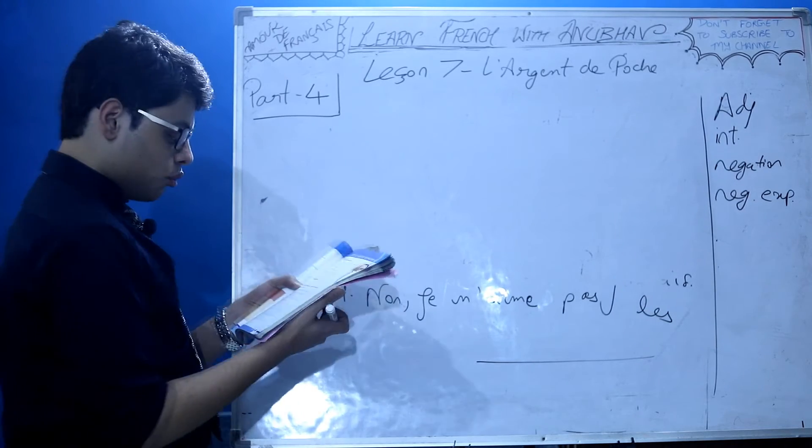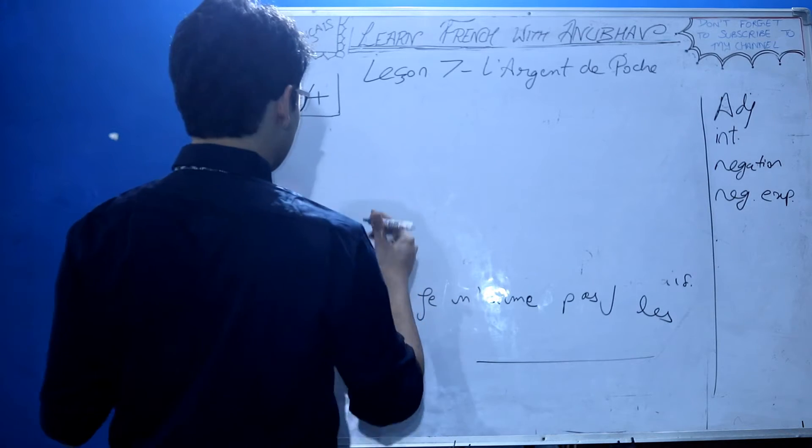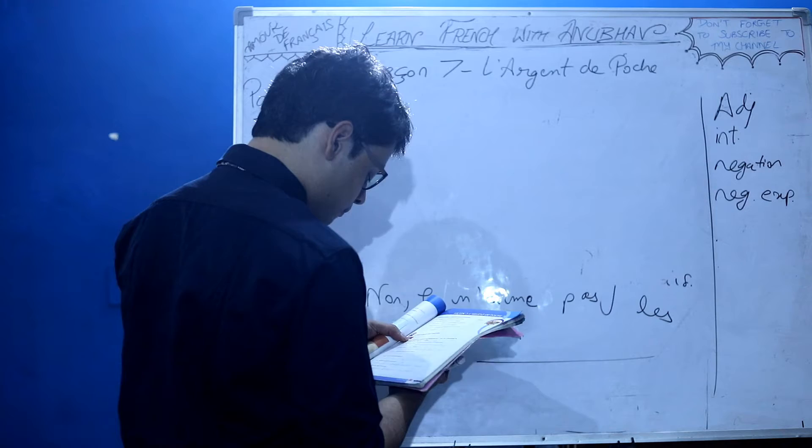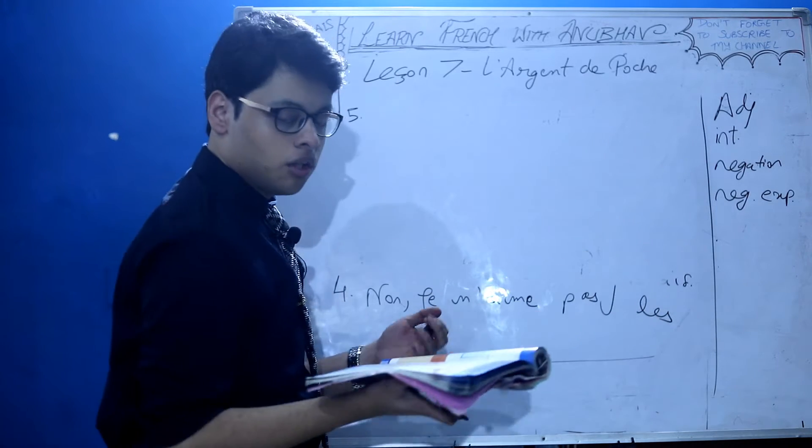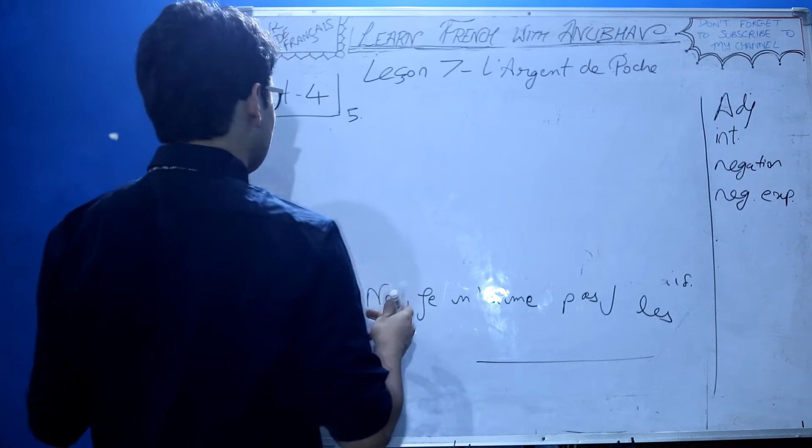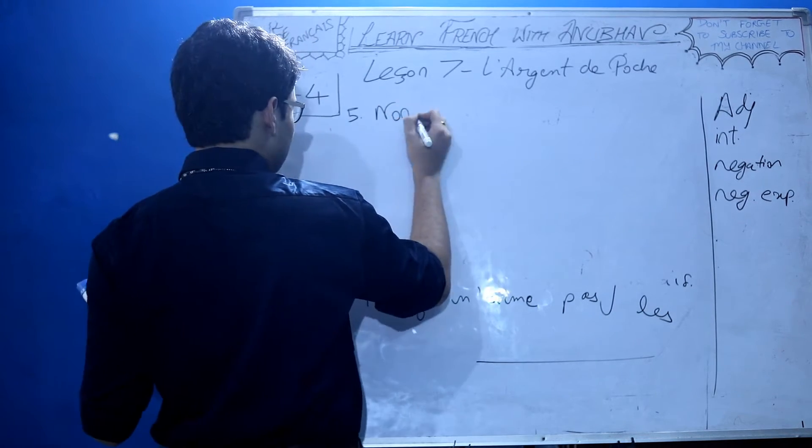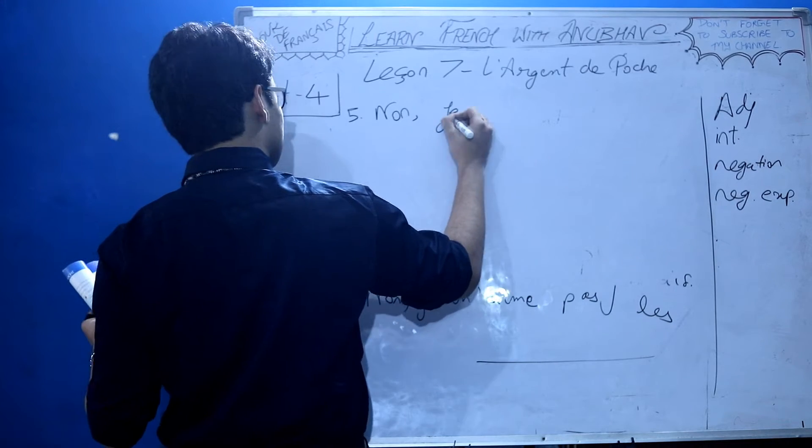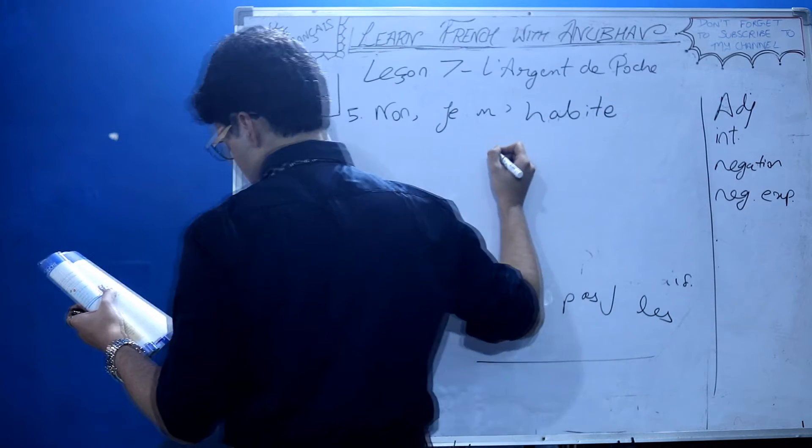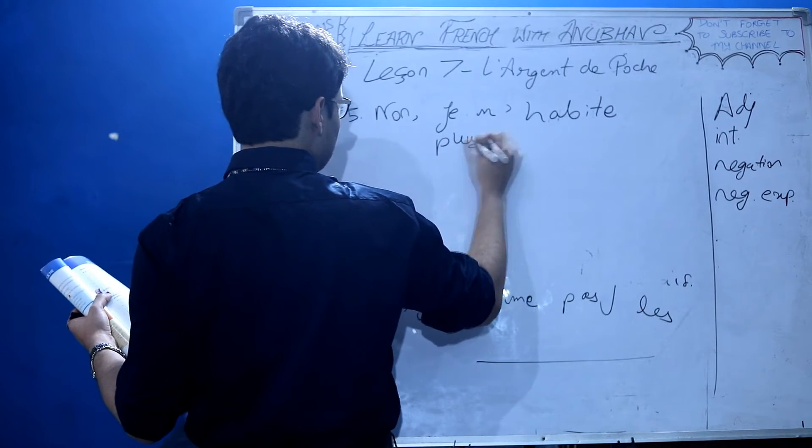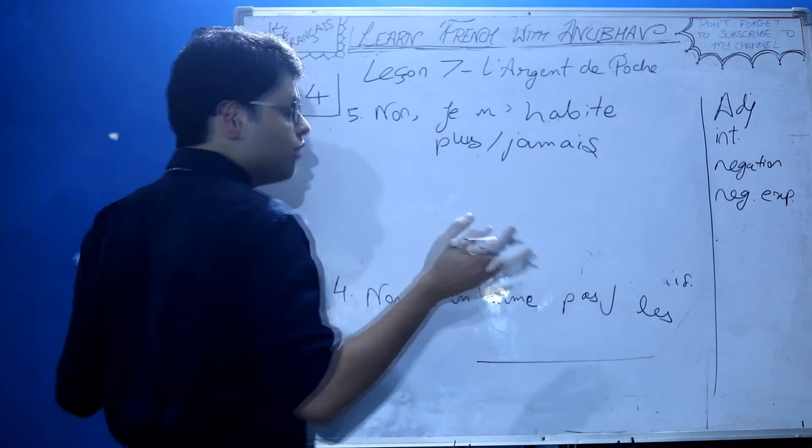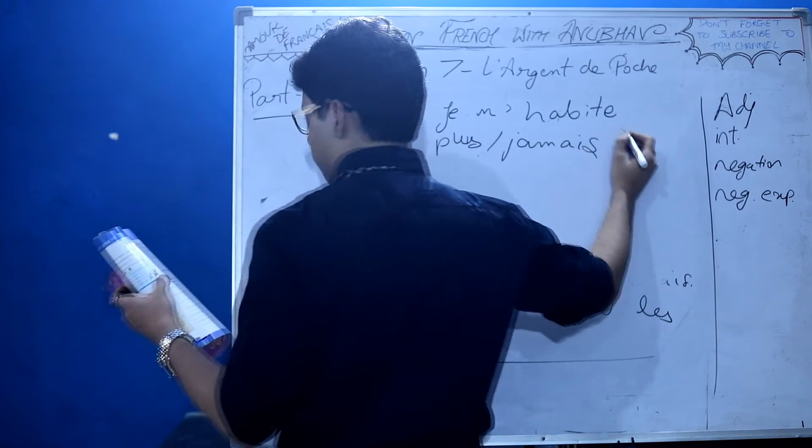Fifth: Vous habitez toujours à Mumbai? It's the same as the previous one with tous les jours. You can write either jamais or plus - both are fine. Since jamais is not an option, go for plus. But jamais is also not wrong. Je n'habite plus à Mumbai. Plus can work, jamais can work - like I never lived in Mumbai or I no longer live in Mumbai.